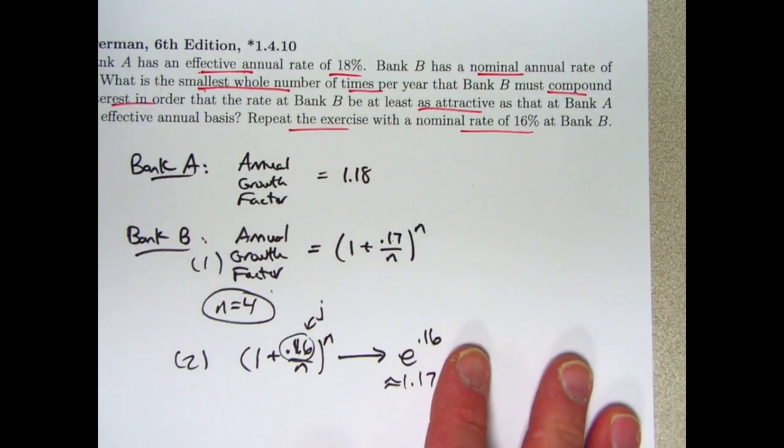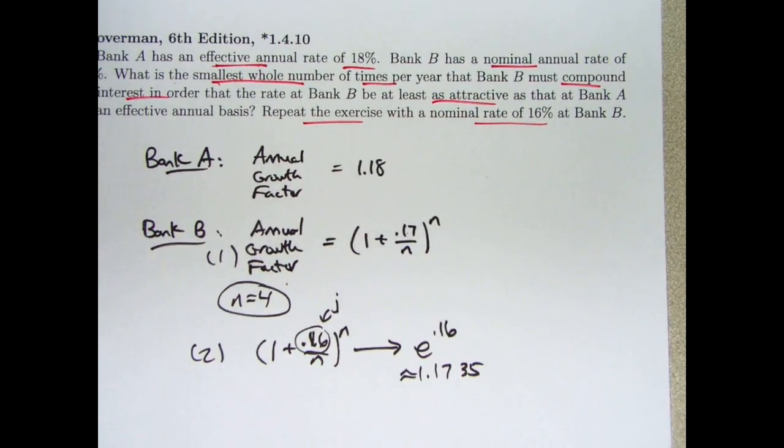So, the answer is, there is no smallest total number of times per year at a 16% nominal rate for Bank B's return to be bigger than 18%.